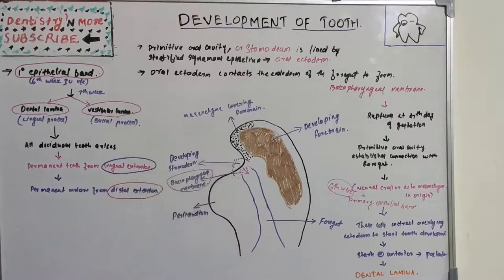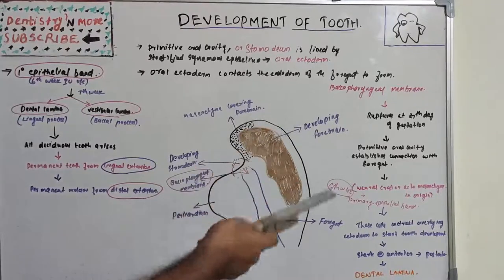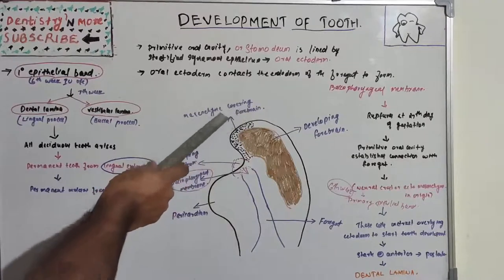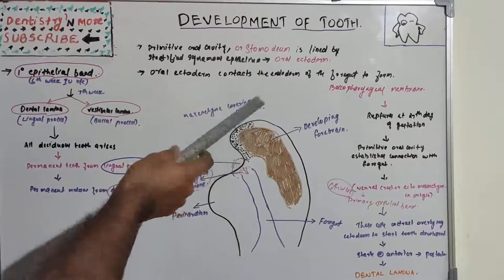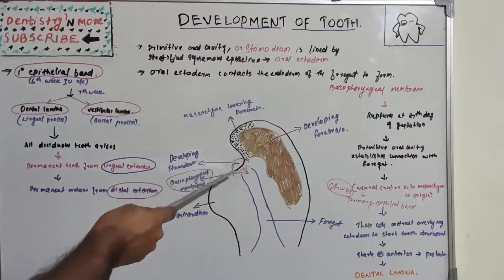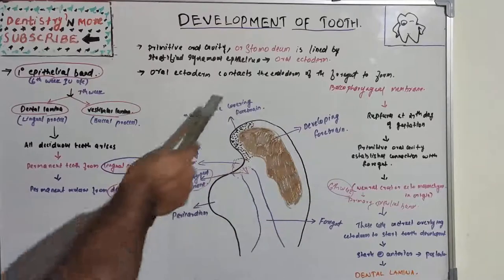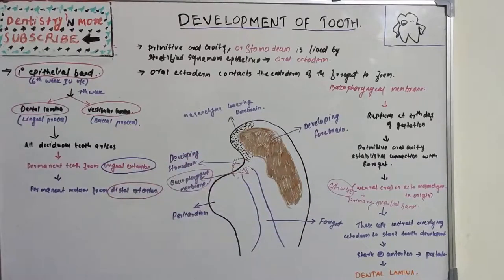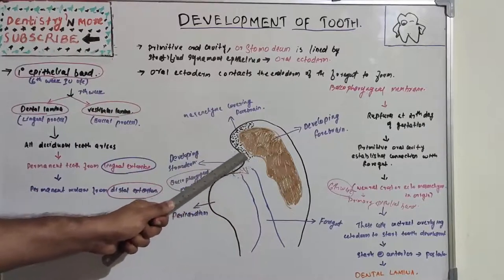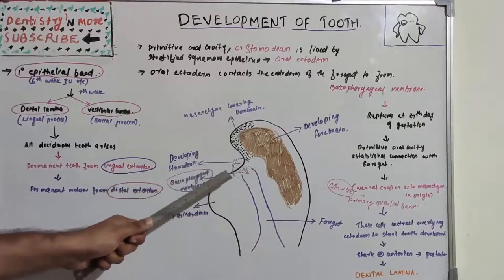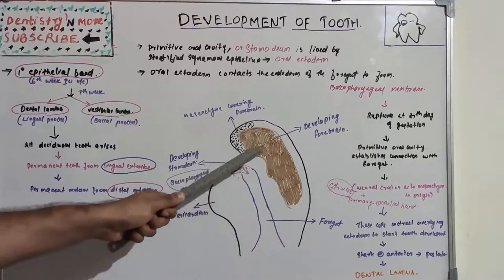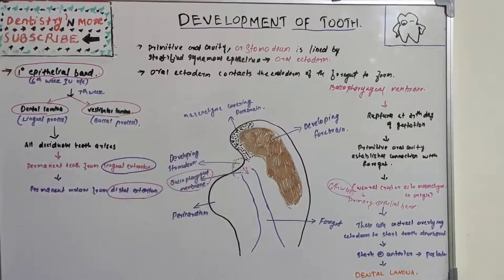This is the embryonic cavity. We have the future brain or developing forebrain, there is mesenchyme-type tissue covering the forebrain, and we have the developing stomodium, which is the future oral cavity. This is the foregut, and this is the pericardium — the future heart. So this is an embryonic cavity at a very early stage of gestation.